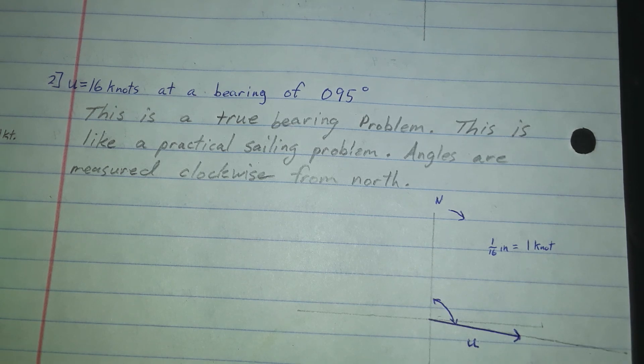Those are two examples of doing arrow diagrams for givens using a protractor. Cheerful calculations.